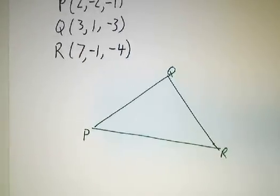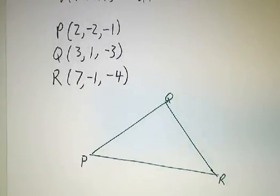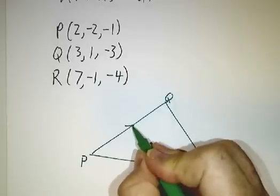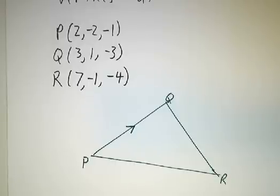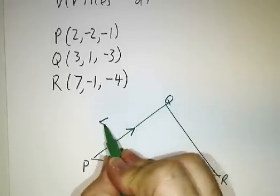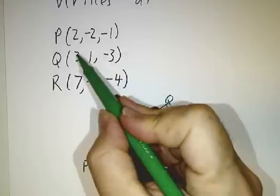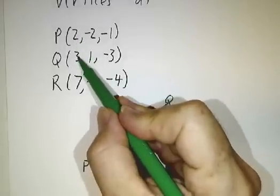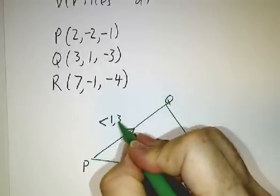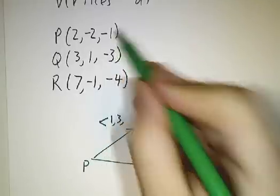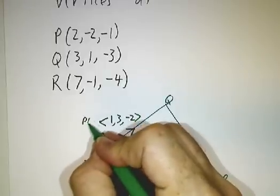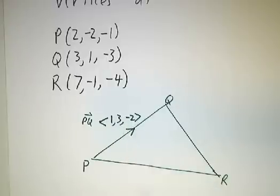So let's look at the picture. The first thing we need to do is figure out what are the displacement vectors of going from one corner to another. So PQ, well this vector, you get it by just subtracting the coordinates of P from the coordinates of Q. 3 minus 2 makes 1, 1 minus negative 2 makes 3, negative 3 minus negative 1 makes negative 2. So the vector PQ is 1, 3, negative 2.